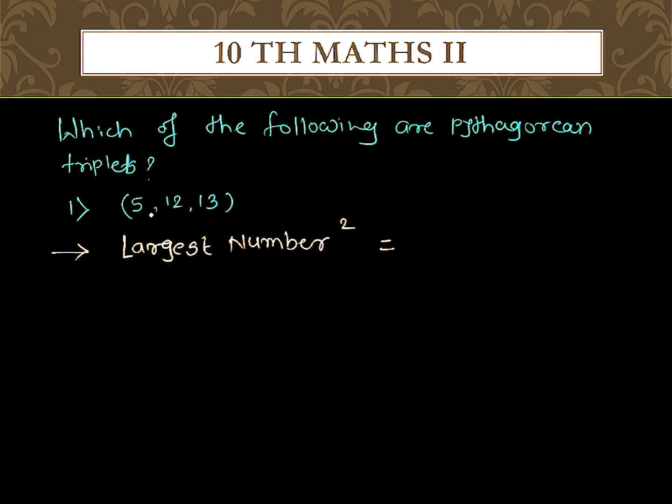The largest number in 5, 12, and 13 is 13. So the square of 13 is 169.